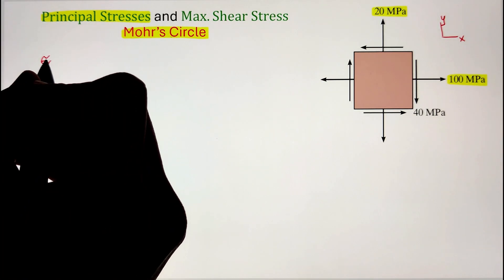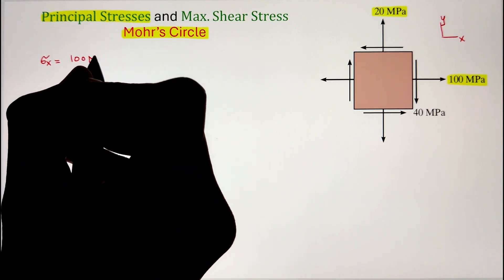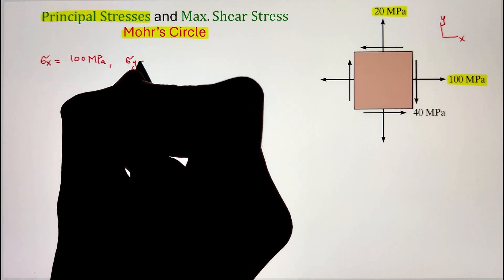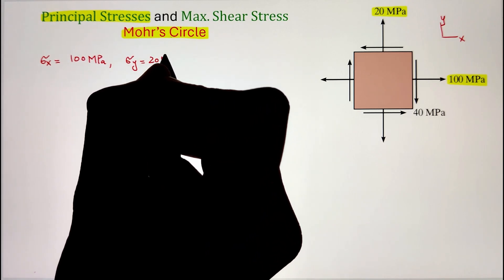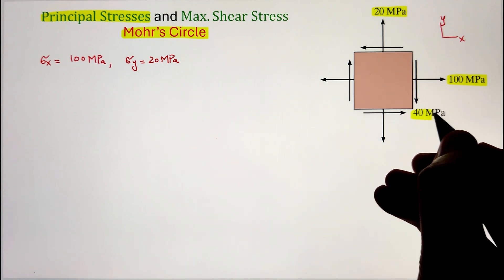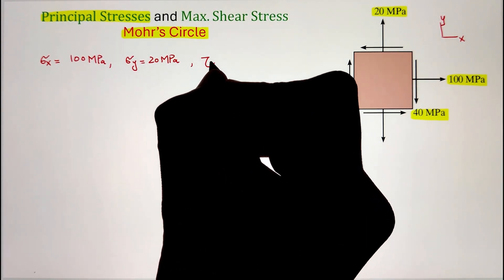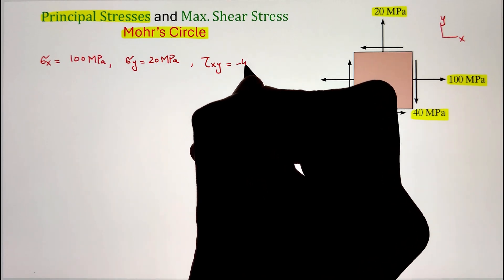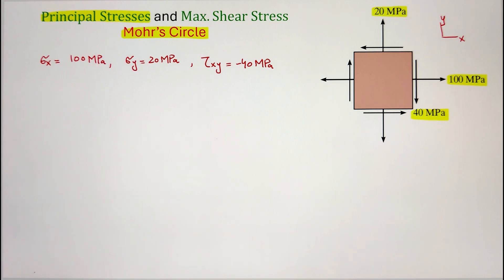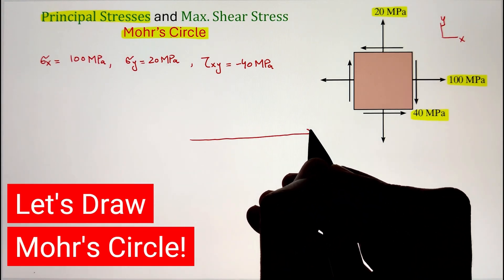Along the x direction, that is the horizontal, we have our normal stress of 100 megapascal, represented as sigma x. Similarly, along the vertical direction, we have our sigma y value of 20 megapascal. Next, I have a shear stress value acting on our xy plane going downward on the right-hand side of the square. Since it is going downward based on the sign convention, it is taken as negative.